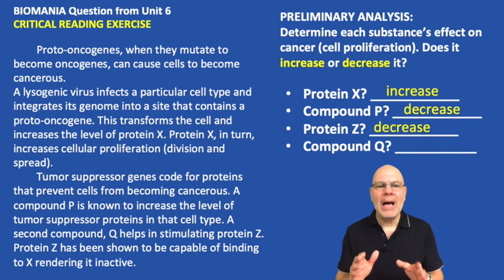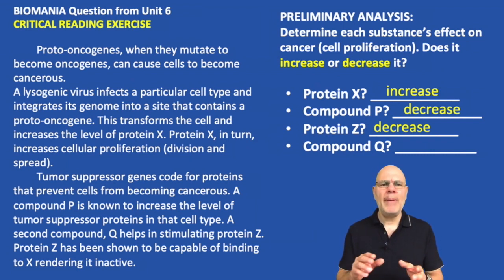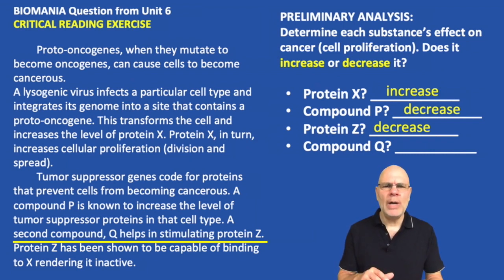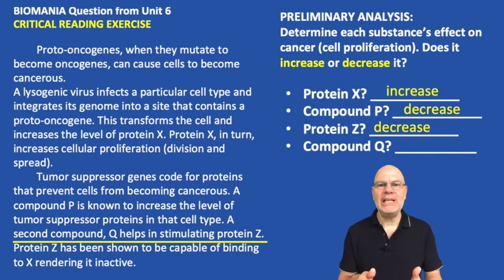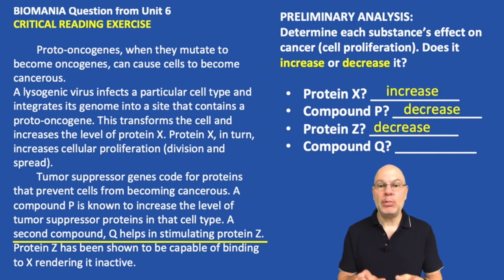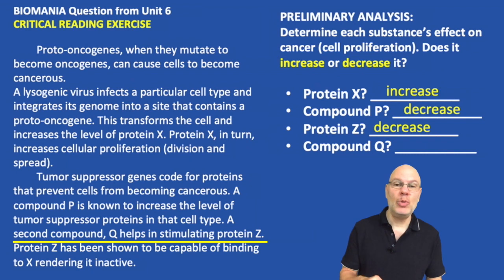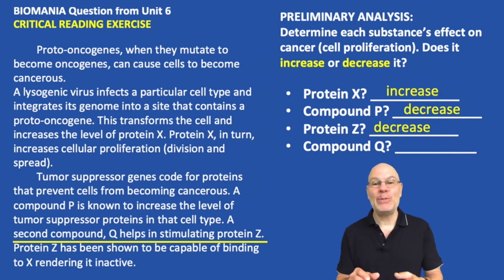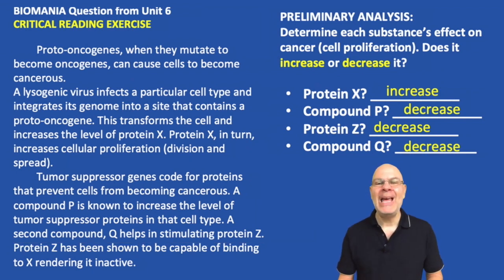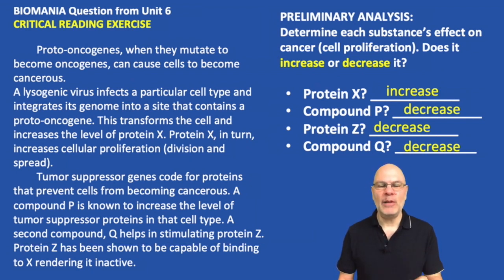Now let's talk about Protein Z. Protein Z is capable of binding to X and rendering it inactive. If X increases cell proliferation and Protein Z makes X inactive, then Protein Z decreases cell proliferation — it's interfering with something that stimulates cancer. Finally, Compound Q helps stimulate Protein Z. So if Protein Z decreases cell proliferation and Compound Q stimulates Protein Z, then Compound Q also decreases cellular proliferation.